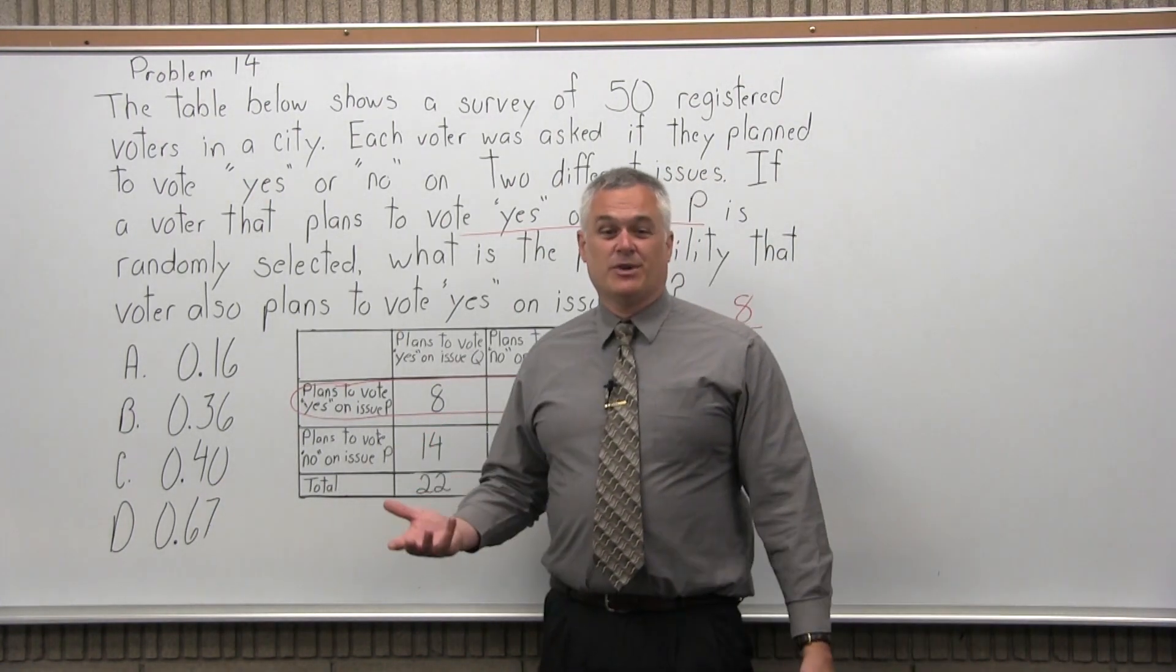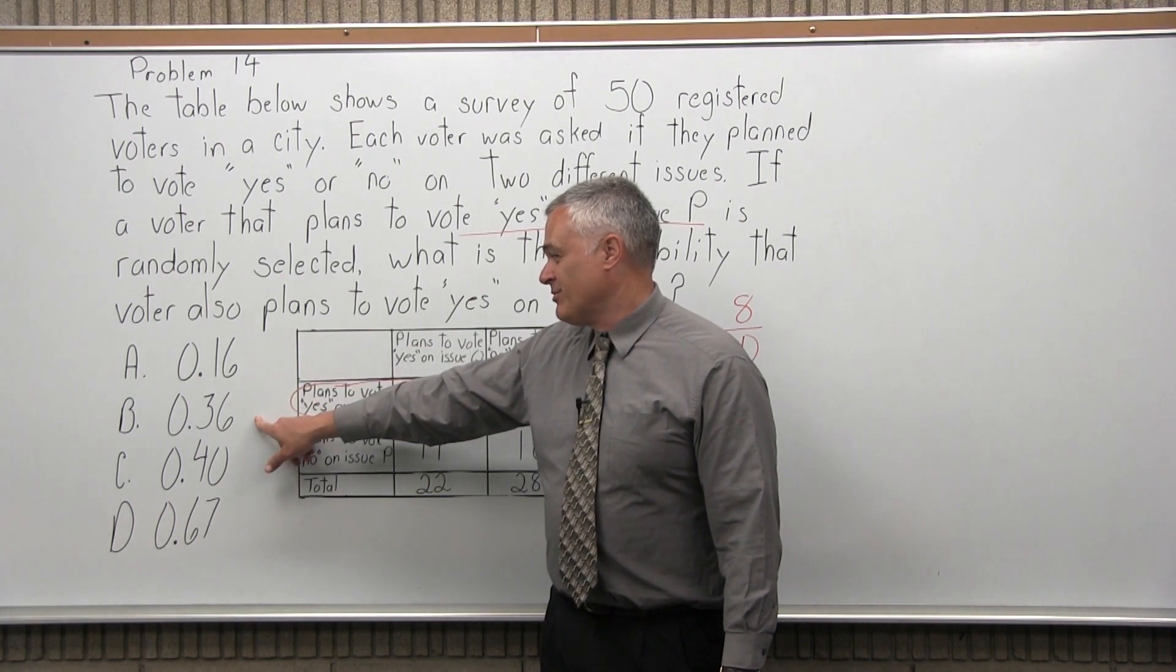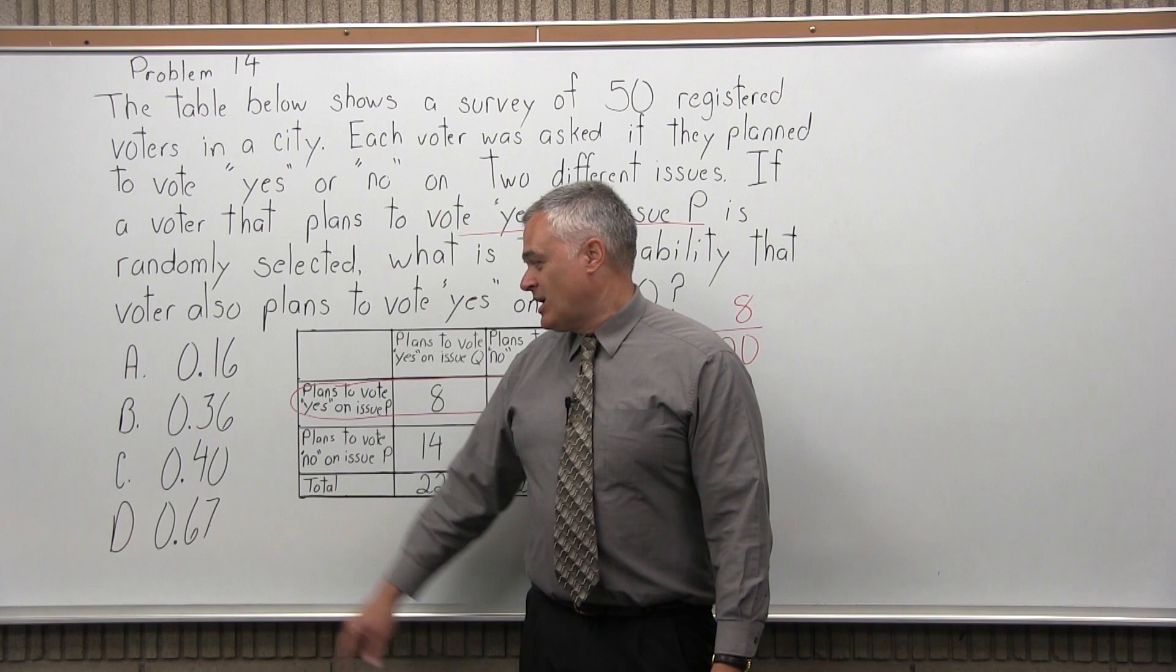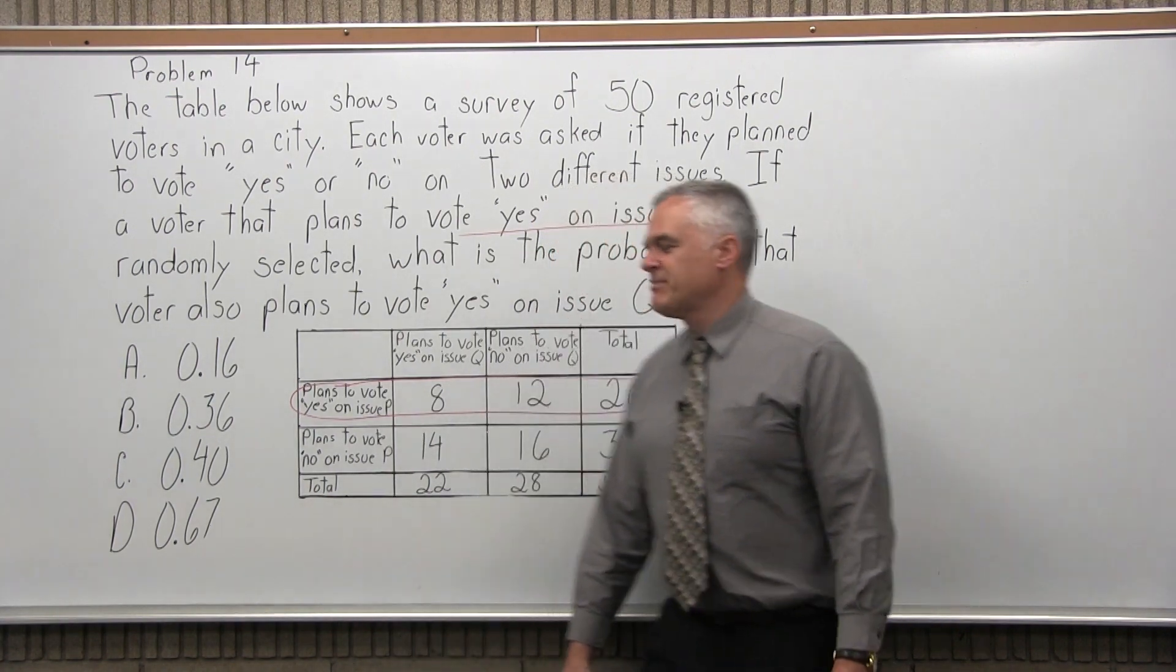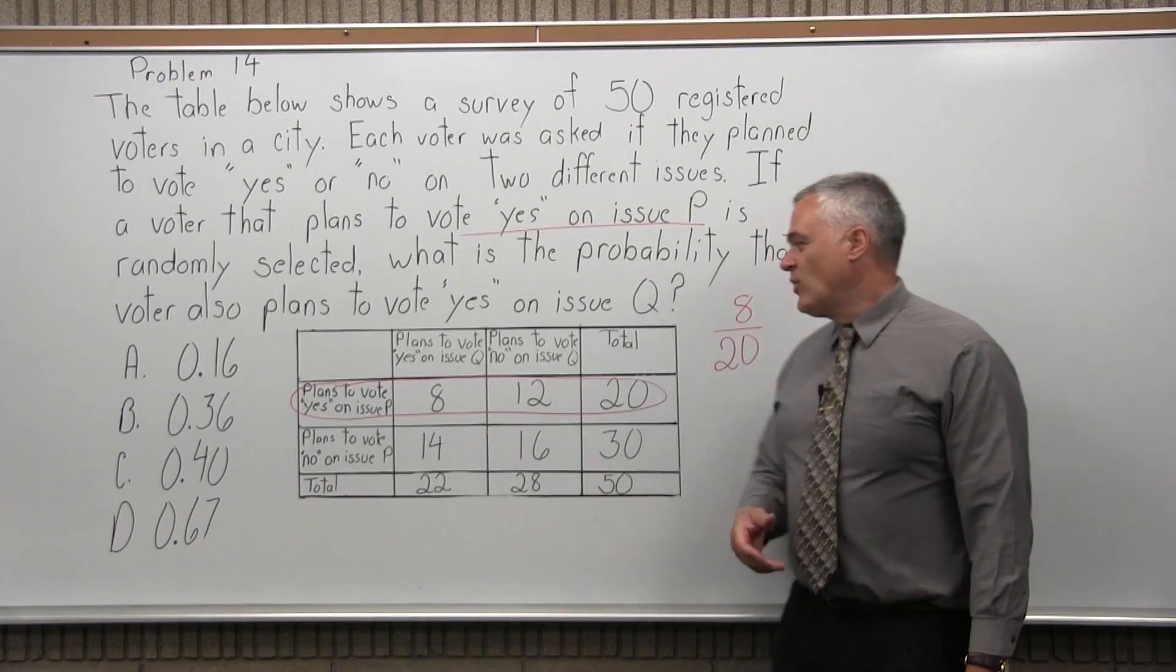Now if we look at our options, none of them 8 over 20, we have option A is 0.16, option B is 0.36, option C is 0.40, and option D is 0.67. So what happened? Did we do something wrong? Well, no, we have one of those answers. It's just not in the same form.